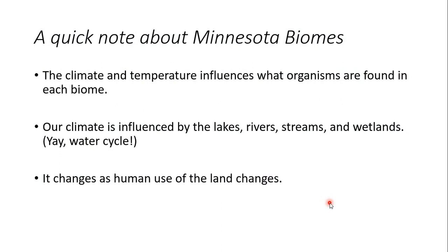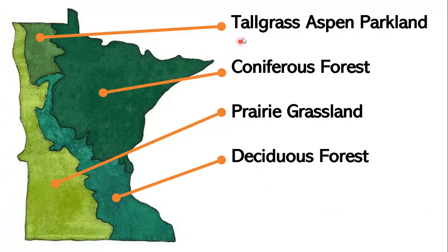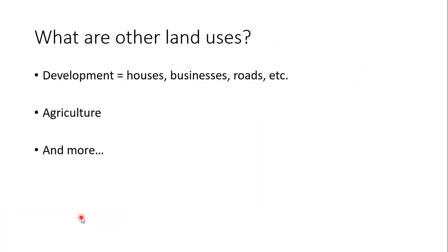Something important to mention is that Minnesota biomes change as human use of the land changes. We're talking about what it's looked like for years and years, and most notably the prairie grassland — a huge part of our state used to be prairie, and now you don't see a whole lot of it. Land use has changed through development like houses, businesses, and roads, or agriculture, since the soil in prairie grasslands is super rich and nutrient-dense, making it great for growing crops.